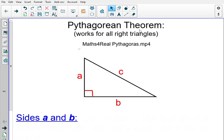Pythagorean Theorem works on all right triangles. A right triangle is considered a right triangle because it has one 90 degree angle.